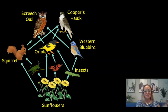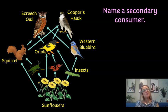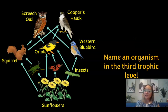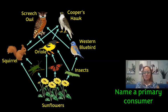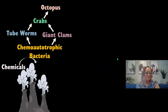Here's a chance to check yourself. A secondary consumer in this food web would be the western bluebird, the oriole, or the squirrel, because they eat the insects below them. An omnivore could be the squirrel or the oriole because they eat both plants and animals. An organism in the third trophic level would be the western bluebird, oriole, or squirrel. And a primary consumer would be the insects, because they're the first ones to eat — they are the herbivores.